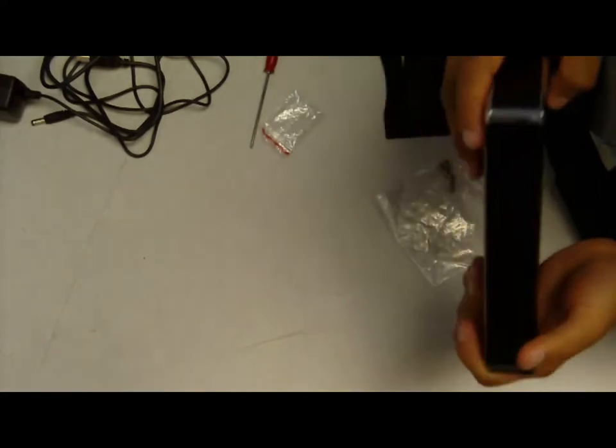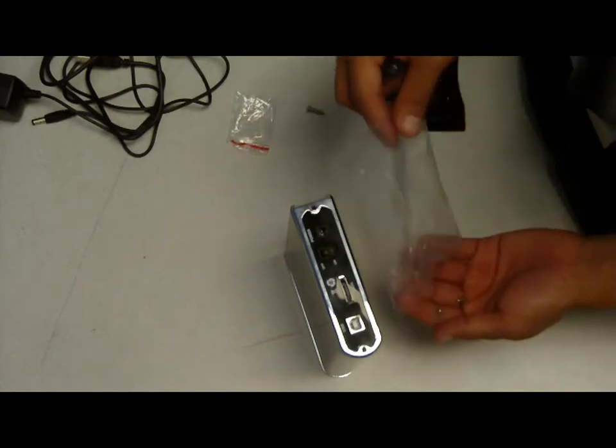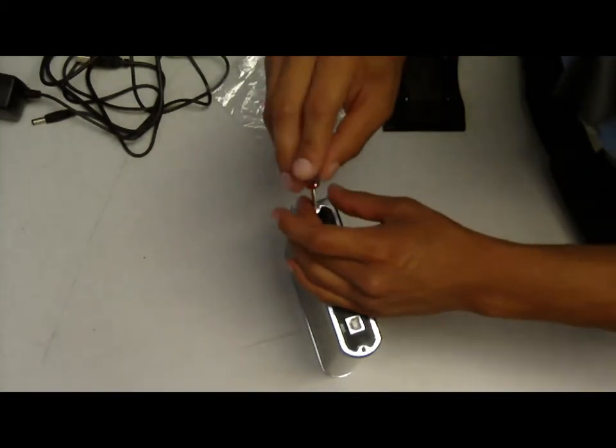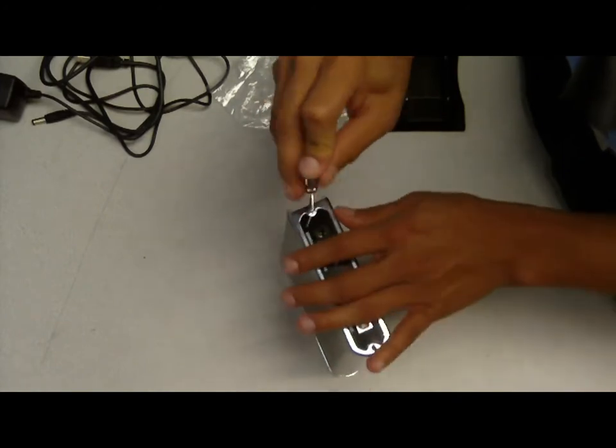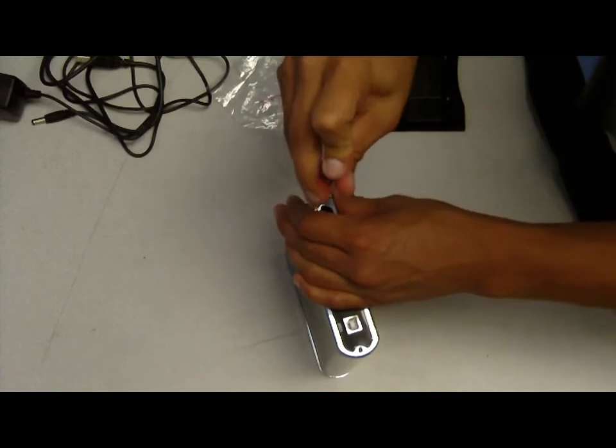There are some more screws that you'll have to apply on the outer. Go ahead and get your screws to lock the enclosure in place. And apply one here and there, that way it does not slip out.